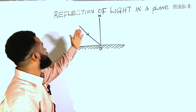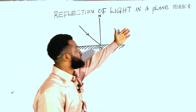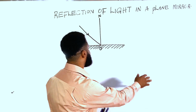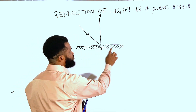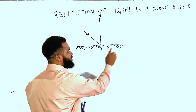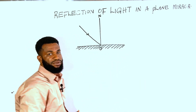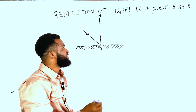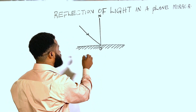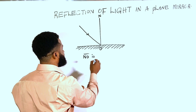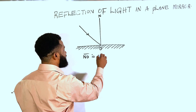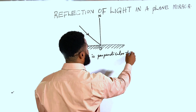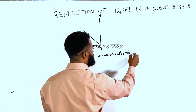I have this topic: reflection of light in a plane mirror. This is the symbol physics likes to use to represent a plane mirror. This straight line is called the normal — NO is perpendicular to the mirror.